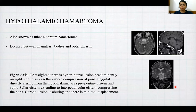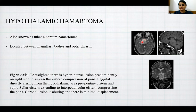Hypothalamic hamartoma, also known as tuber cinereum hamartoma, is located between the mammillary body and the optic chiasm. On axial T2-weighted imaging, there is a hyperintense lesion predominantly on the right side in the suprasellar region with compression of the pons. On sagittal images, the lesion arises directly from the hypothalamic area in the prepontine and suprasellar regions, extending into the interpeduncular cistern and compressing the pons. On coronal images, the lesion is abutting with minimal displacement.